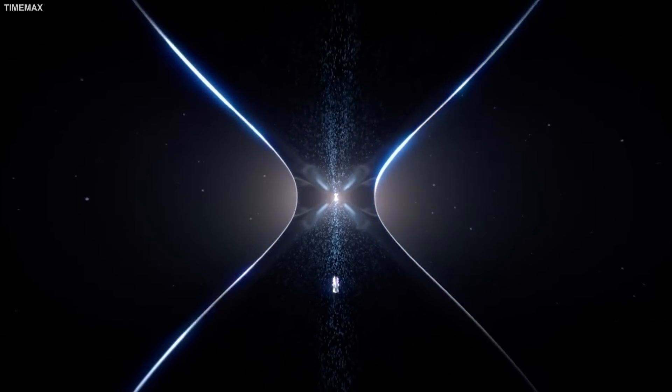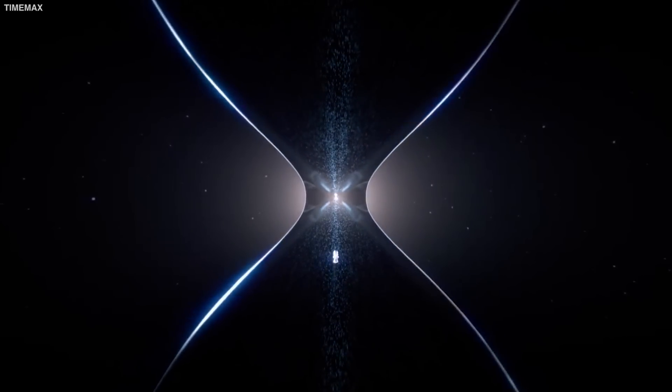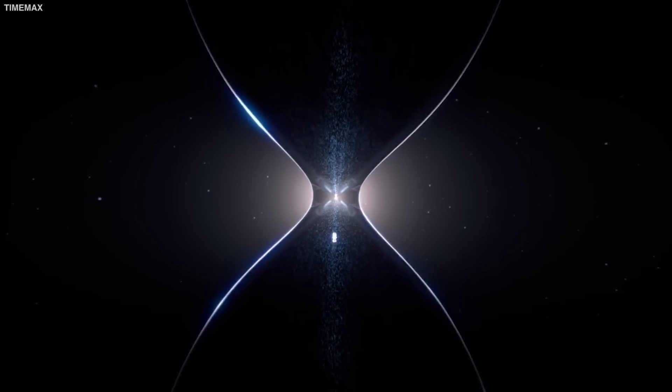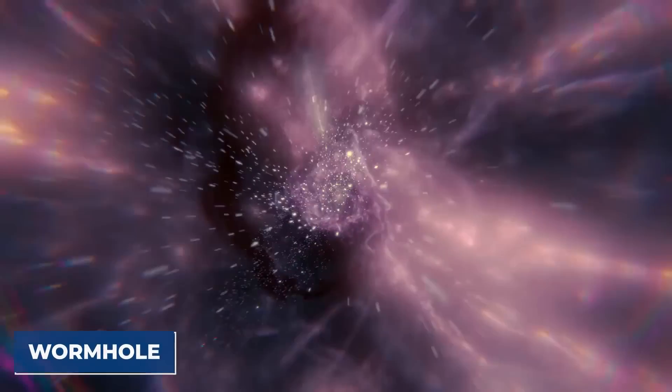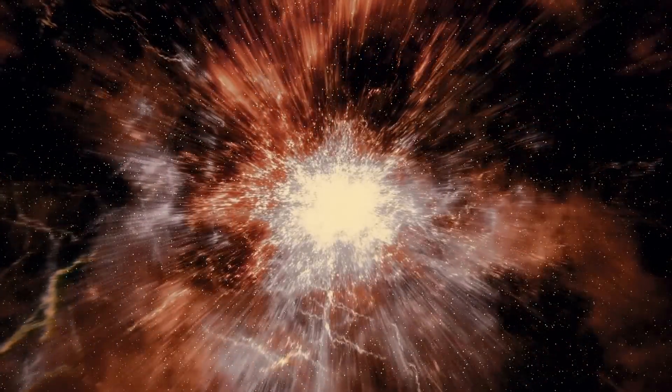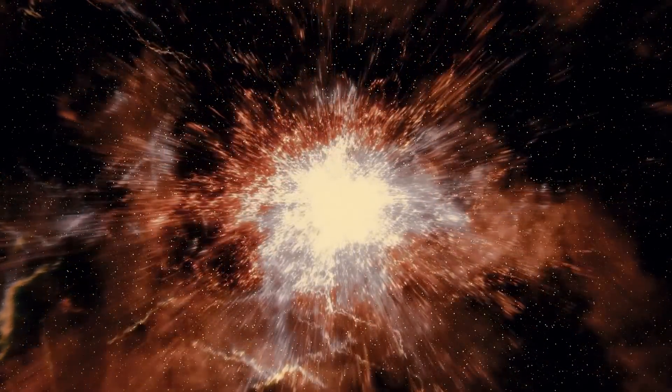However, because the two holes would exist in separate places in space, a tunnel would bridge the two ends. This tunnel is known as a wormhole. However, while wormholes can exist, there was a challenge: stability.